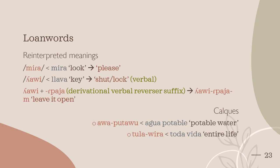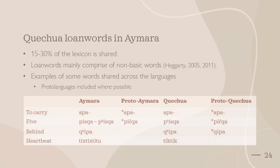While many words are directly borrowed with their meanings intact, some have their meanings reinterpreted or expanded on. For instance, the word Mura was originally borrowed from a word meaning look, and is now used as please in Mulyac Aymara. Another word originating from ki has been expanded to also mean shut or lock in a verbal way, mainly done through verbal suffixes, such as adding a derivational verbal reverser suffix to make the phrase leave it open. Notable calques within the language also include full noun phrases such as puttable water. As for Quechua loanwords in Aymara, 15–30% of the lexicon is shared, while loanwords mainly comprise non-basic words, with basic words being more native. For instance, the words for the numbers 1 and 2 do not appear to be cognates, while later numbers do.